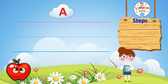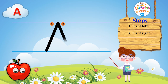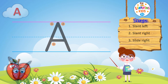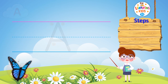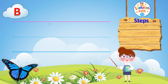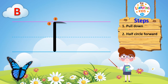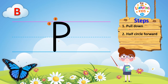Learn to write uppercase letter A. Step 1: slant left. Step 2: slant right. Step 3: slide right.